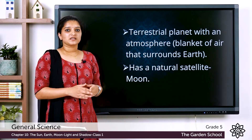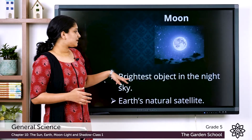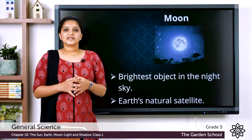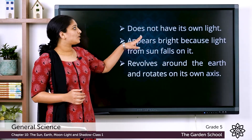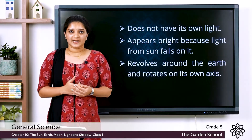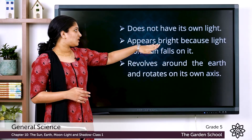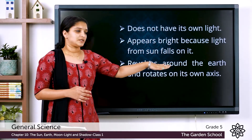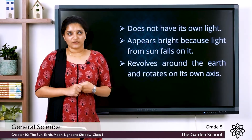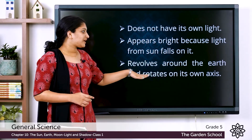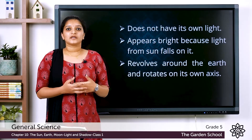Earth has a natural satellite known as the moon. Moon is the brightest object in the night sky. It is the earth's natural satellite and it does not have its own light. The moon appears bright because light from the sun falls on it and gets reflected. It revolves around the earth and rotates on its own axis.